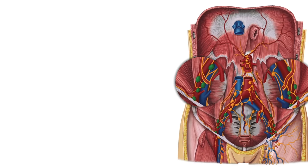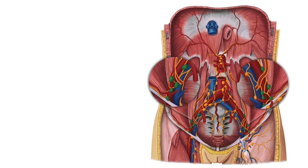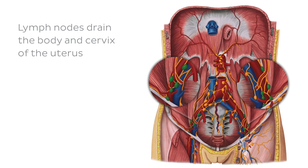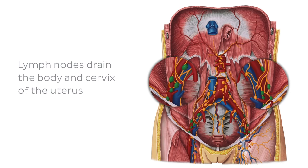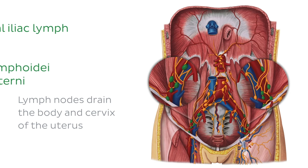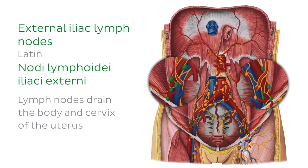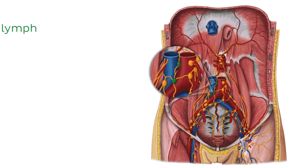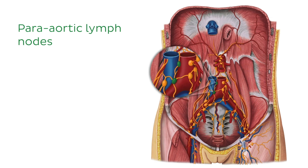Lastly, we have the lymphatic drainage of the uterus. Lymph from the body and cervix drains mostly to the internal and external iliac nodes, which we can see here highlighted in green. Lymph from the fundus drains to the para-aortic nodes.